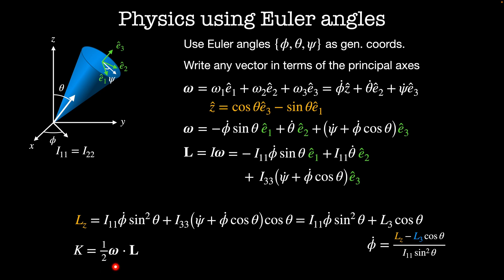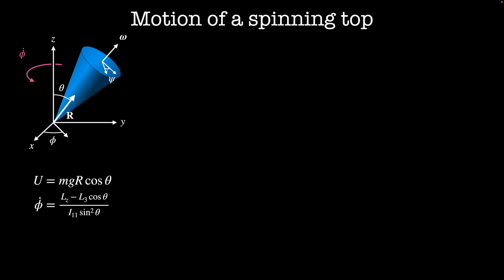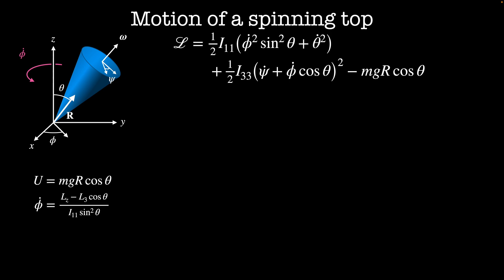The other useful physical quantity is the kinetic energy, which is one-half times the angular velocity vector dotted into the angular momentum. This is given by one-half I11 times (phi-dot squared times sine-squared theta plus theta-dot squared) plus one-half I33 times omega 3 squared. If this object is a spinning top with mass m and distance r from the origin to its center of mass, the potential energy is mgr cosine theta. The top rotates about the z-axis at rate phi-dot, which equals (L_z minus L3 cosine theta) divided by (I11 times sine-squared theta). The Lagrangian is the kinetic energy minus the potential energy: one-half I11 times (phi-dot squared times sine-squared theta plus theta-dot squared) plus one-half I33 times (psi-dot plus phi-dot cosine theta) squared minus mgr cosine theta.